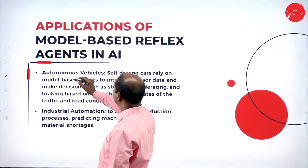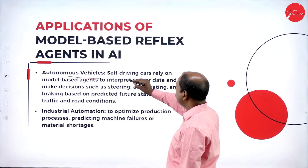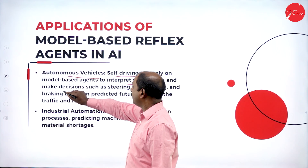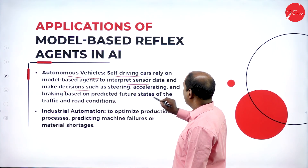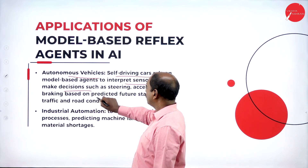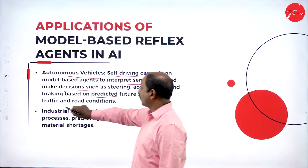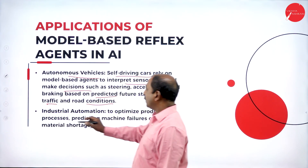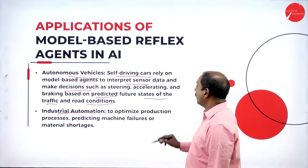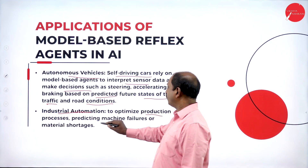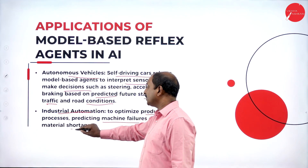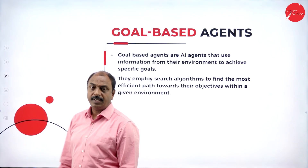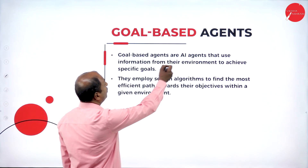Next application is autonomous vehicles. Self-driving cars rely on model based agents to interpret sensor data for decision making, such as steering, accelerating and braking based on predicted future states of traffic and road conditions. Another application is industrial automation — used to optimize production processes, predicting machine failures or material shortages. These are the applications of model based reflex agent. Next we will see another type of agent — the goal based agent.